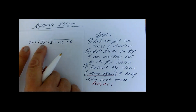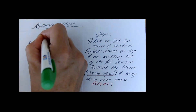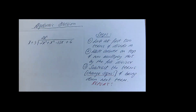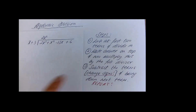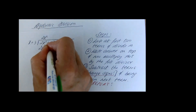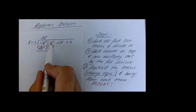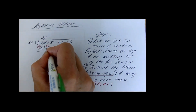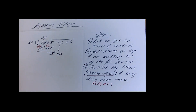Look at the first two terms: x and 2x cubed. What would you multiply by x to get 2x cubed? The answer is 2x squared. Multiply 2x squared by the full divisor: 2x squared times x is 2x cubed, and 2x squared times 3 is 6x squared. Now subtract — change the signs. 2x cubed cancels, and 1x squared take away 6x squared is minus 5x squared. Bring down the next term.